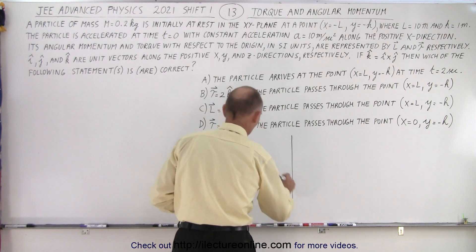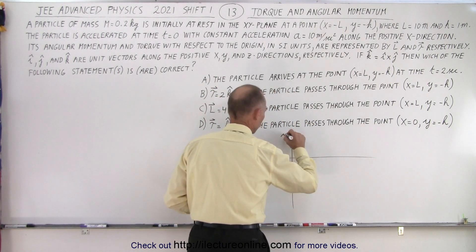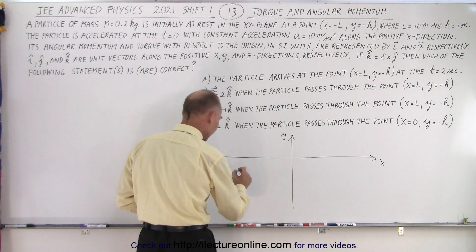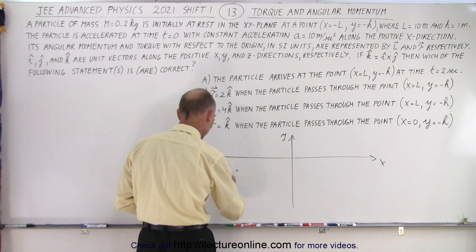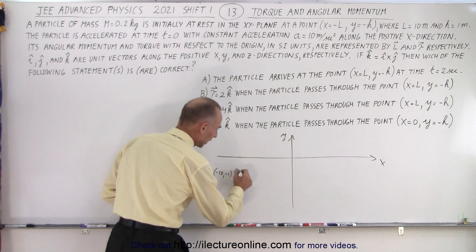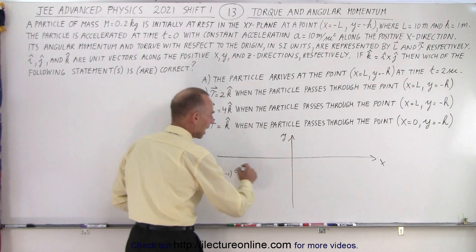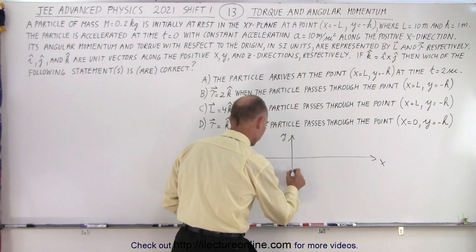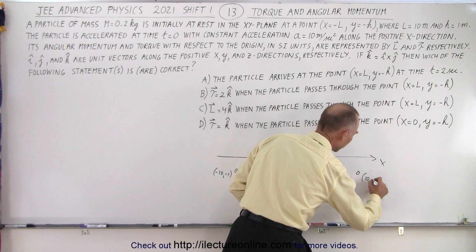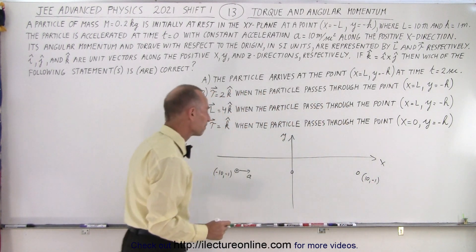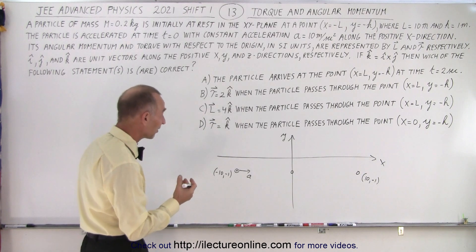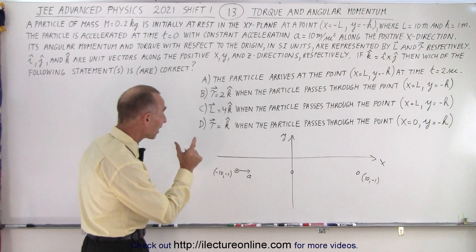So here we have the xy-axis, and at minus 10, minus 1, so right here, this would be the point minus 10, minus 1. That's where the particle starts. It accelerates with acceleration a and it ends up passing the point over here and passing the point over here. We're at the point 10 comma minus 1 like this.